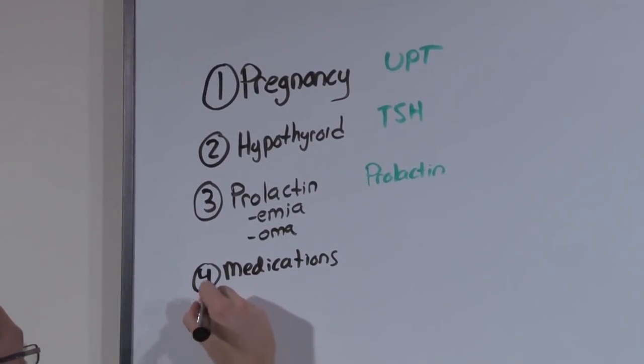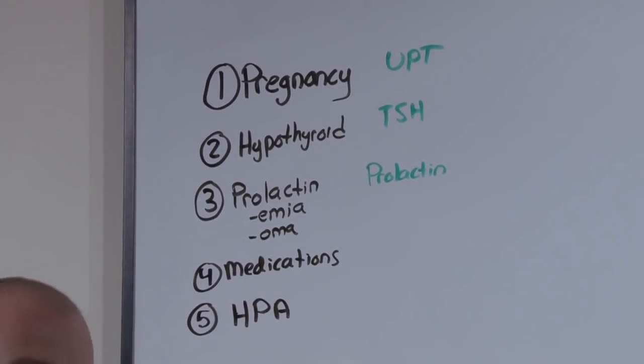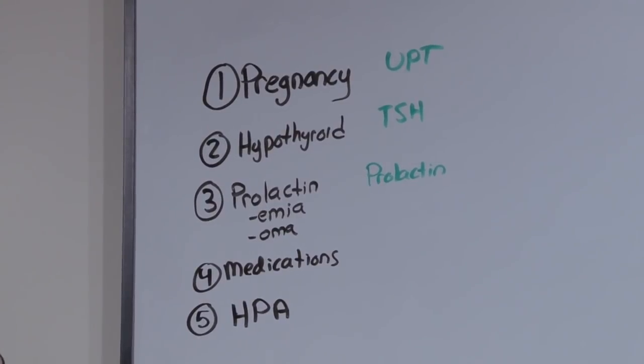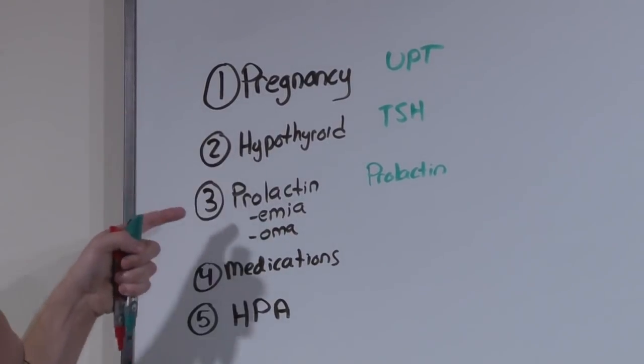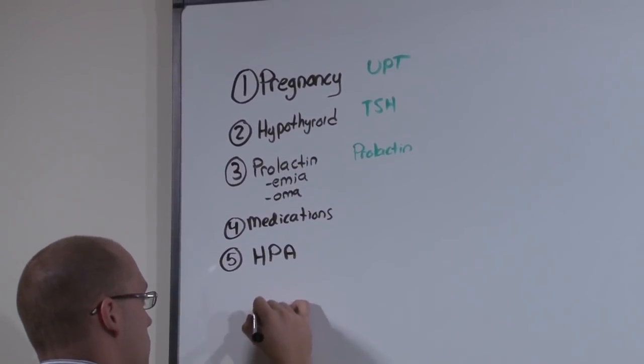And finally, if these causes are negative, you'll assess the axis, the hypothalamic-pituitary axis. Let's first talk about the mechanism of how everything but pregnancy can cause secondary amenorrhea. To that, we turn to our axis.